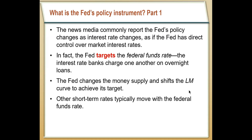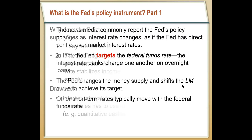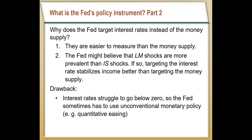So why does the Fed target interest rates? First, interest rates are far easier to measure than the money supply. Interest rates are presented every single day and it's very clear what an interest rate is. We talked in chapter four about how it gets muddy what money really is — is Venmo money? Are demand deposits money? But also, the Fed thinks LM shocks — changes in money demand — tend to be more common than IS shocks. So if the Fed targets interest rates, they do away with LM shocks: all changes in money demand are immediately accommodated by changes in the money supply, and the LM curve doesn't actually move. Targeting interest rates therefore stabilizes the economy better.